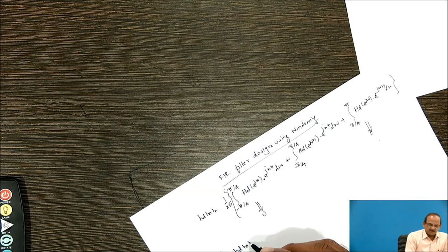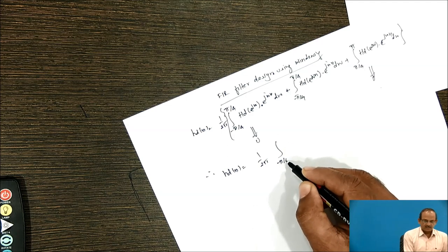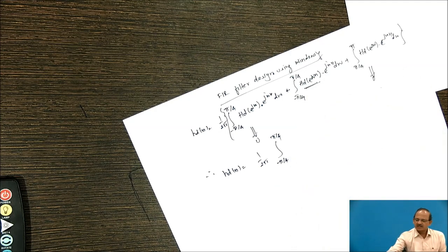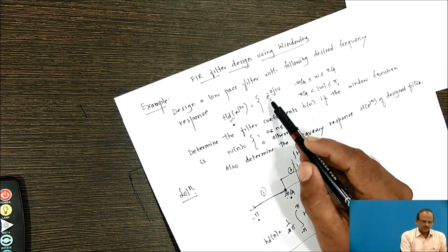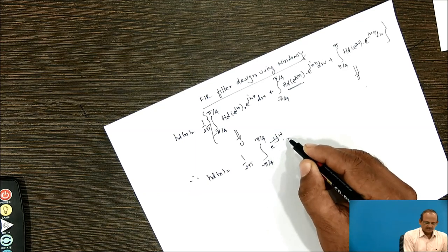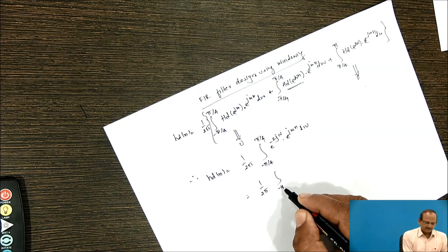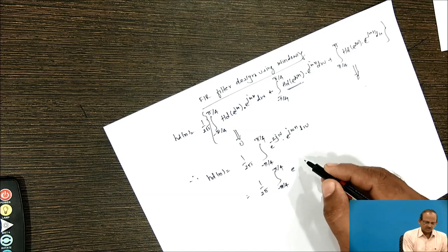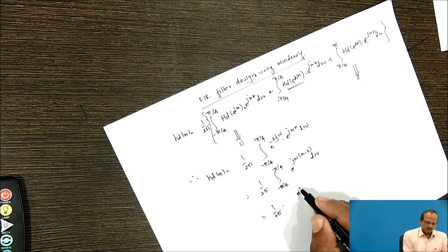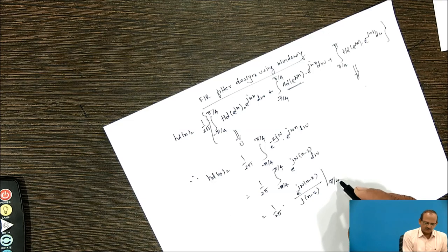Therefore hd(n) can be written as hd(n) = (1/2π) ∫ from -π/4 to +π/4, because in this range the value of Hd(e^jω) is e^(-2jω). So this becomes (1/2π) ∫ from -π/4 to +π/4 of e^(j·ω·(n-2)) dω. Taking this integral gives e^(j·ω·(n-2)) / (j(n-2)) evaluated from -π/4 to +π/4.